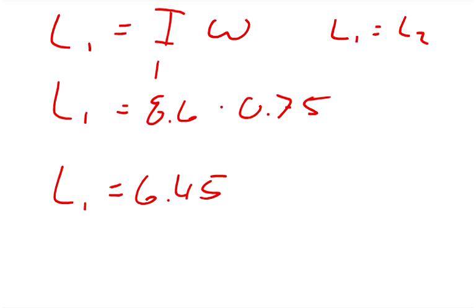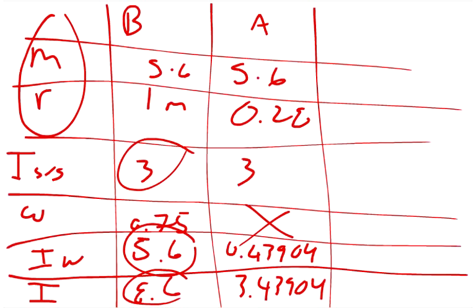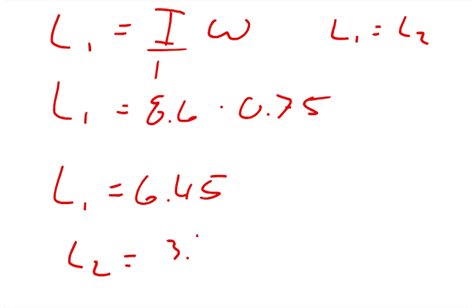Now, we know because of the conservation of angular momentum, L1 equals L2. Well, what does L2 equal? So L2 equals, we just need to put in I. We already calculated I over here. So 3.43904 times the new angular velocity.